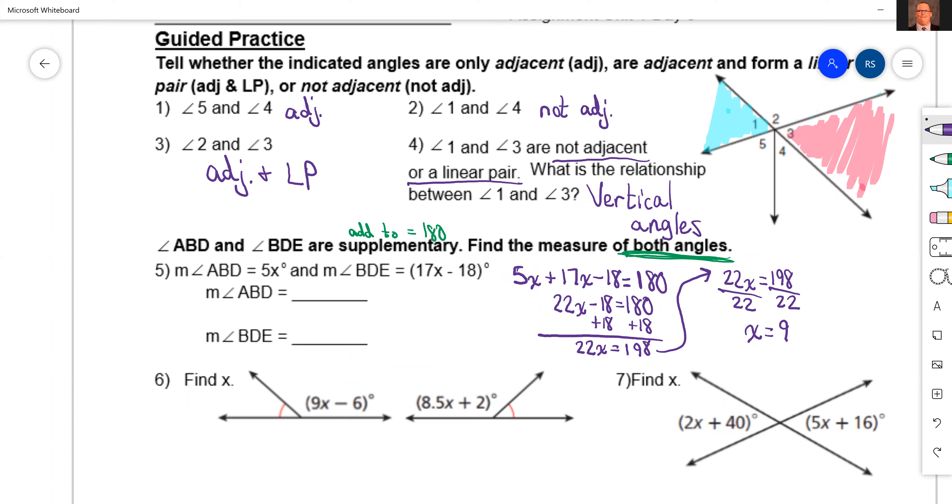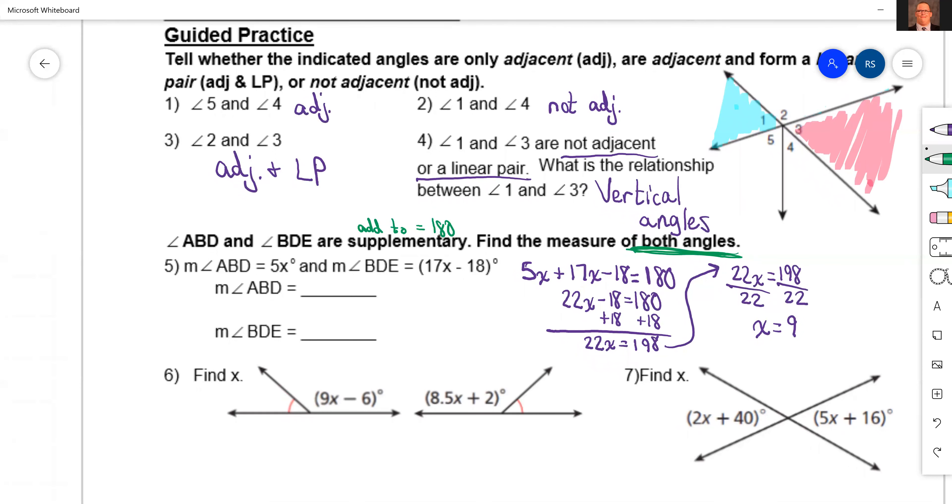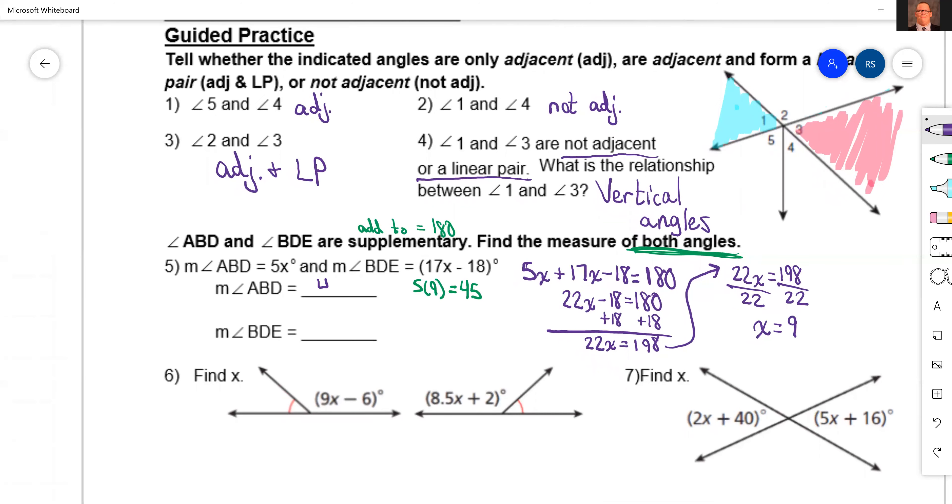But they ask us to find both angles, so let's come in here now and plug it in. For ABD we're going to have 5 times 9, which gives us 45, so this one should be 45. Now for the next one, 17 times 9 minus 18, that should give us 135.